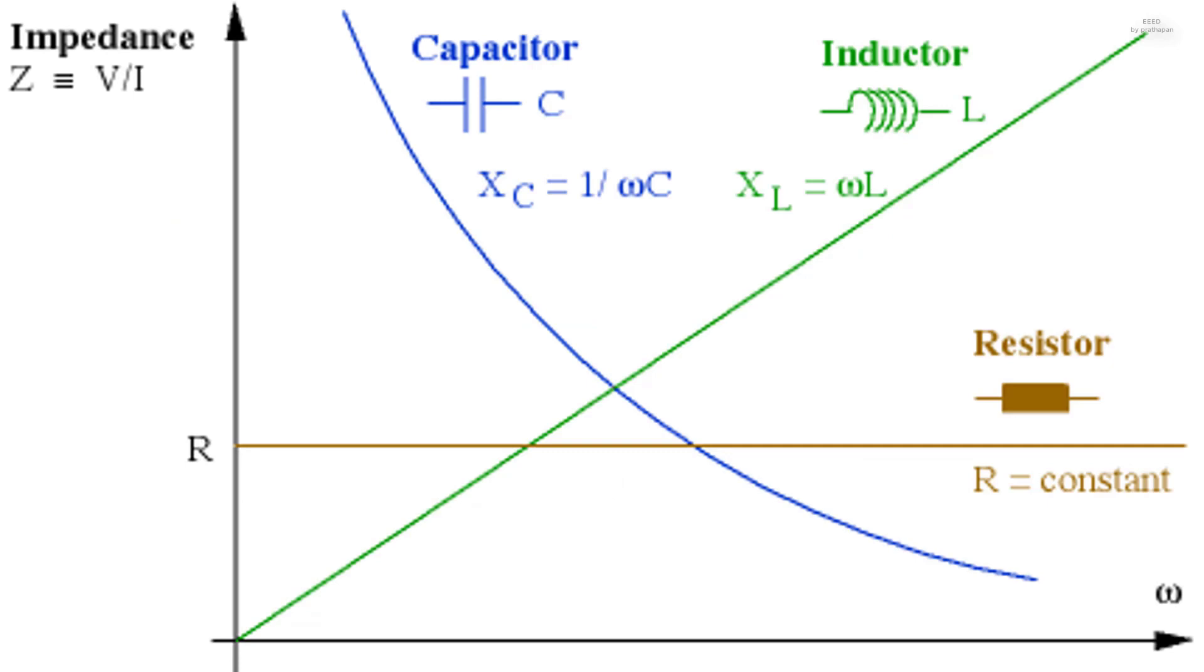The same information is given graphically below. It is easy to remember the frequency dependence by thinking of the DC zero frequency behavior. At DC, an inductor is a short circuit, a piece of wire, so its impedance is zero.